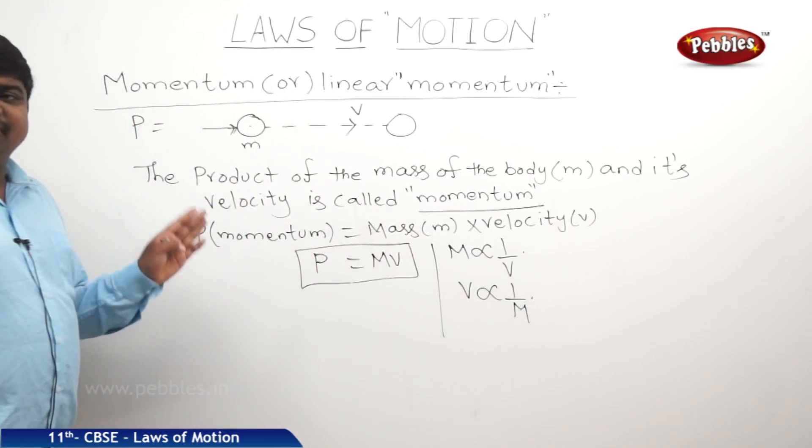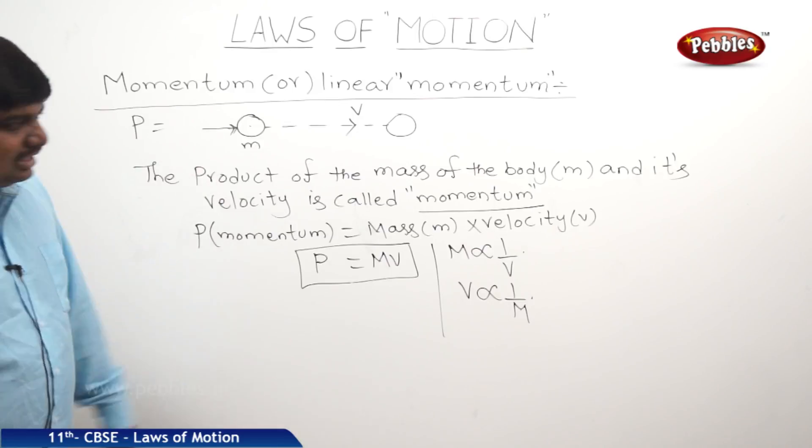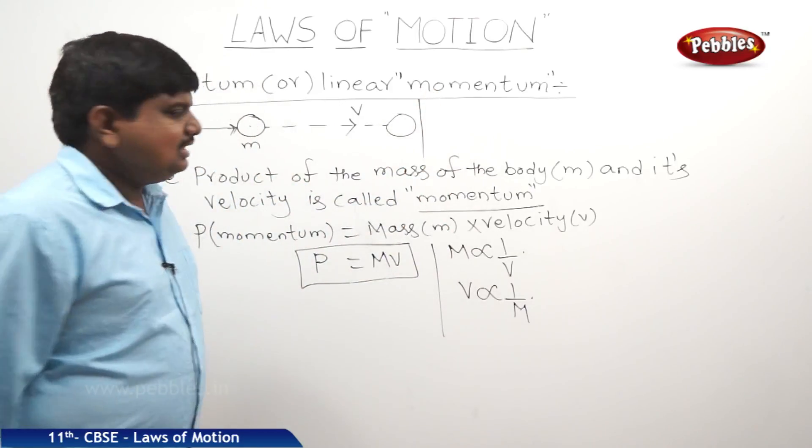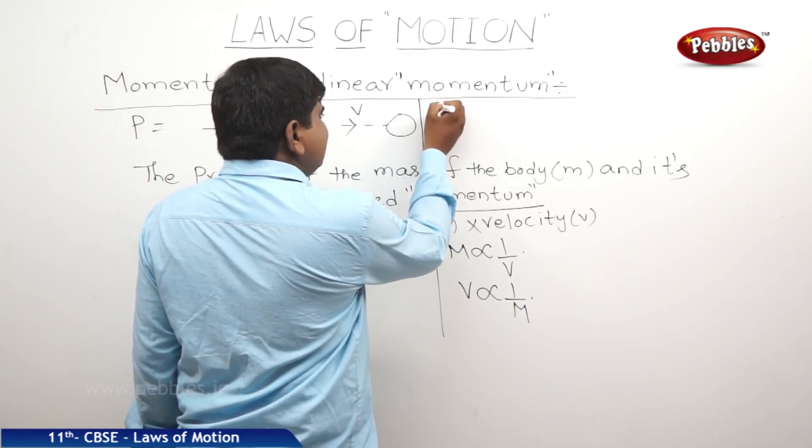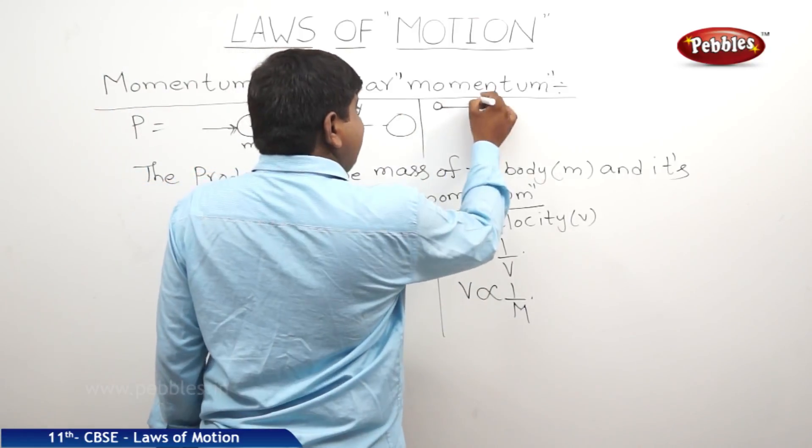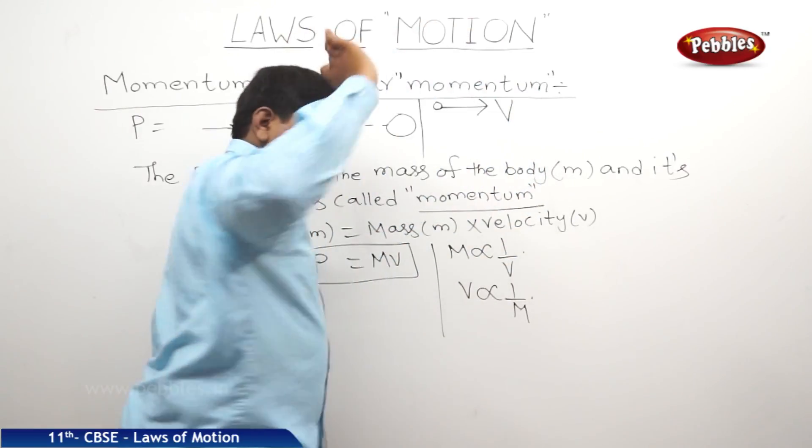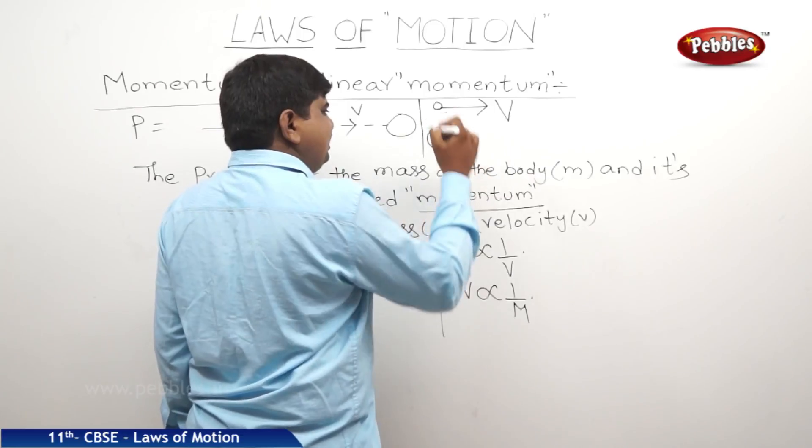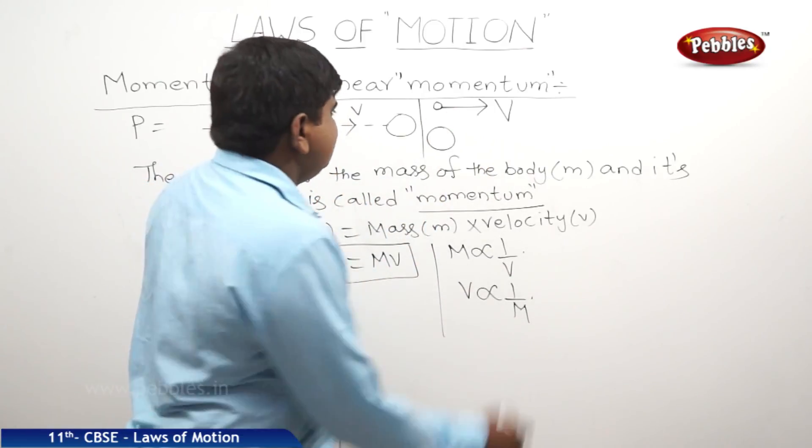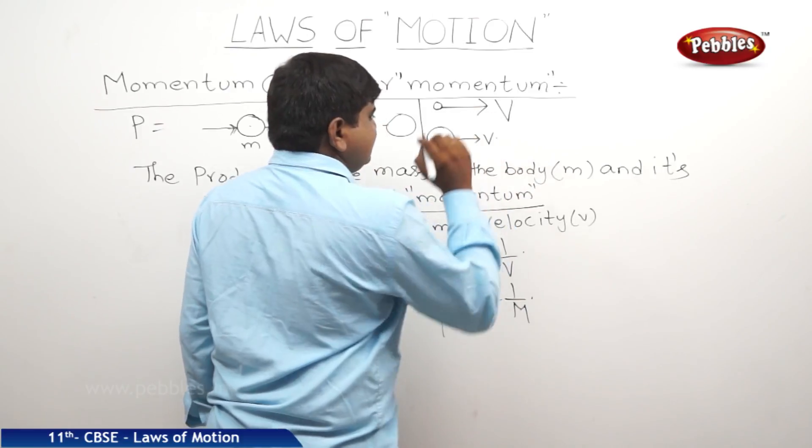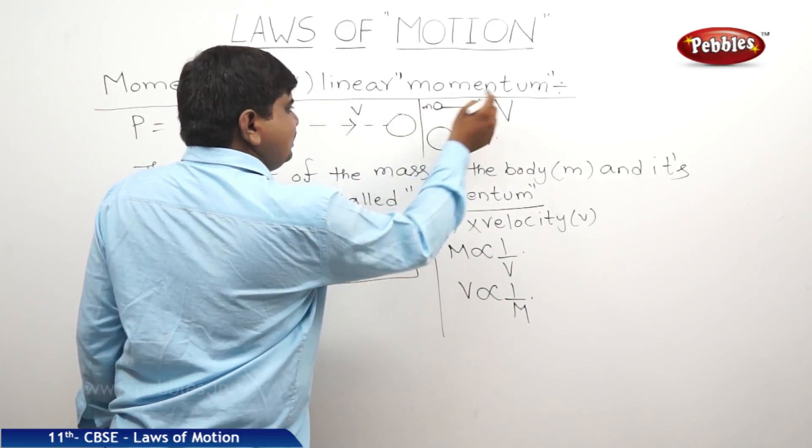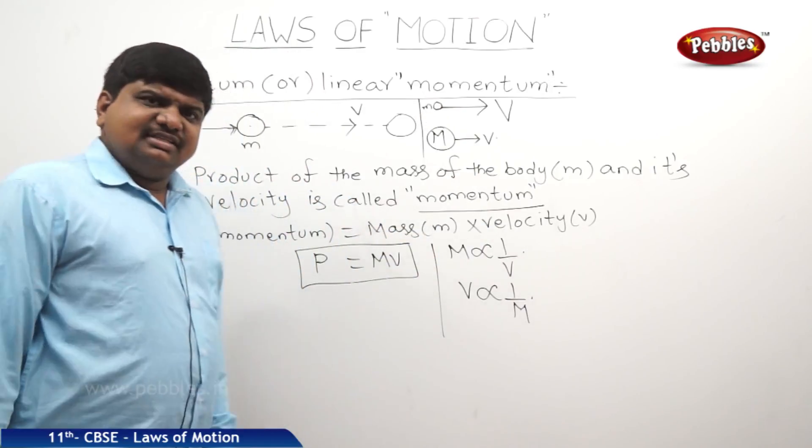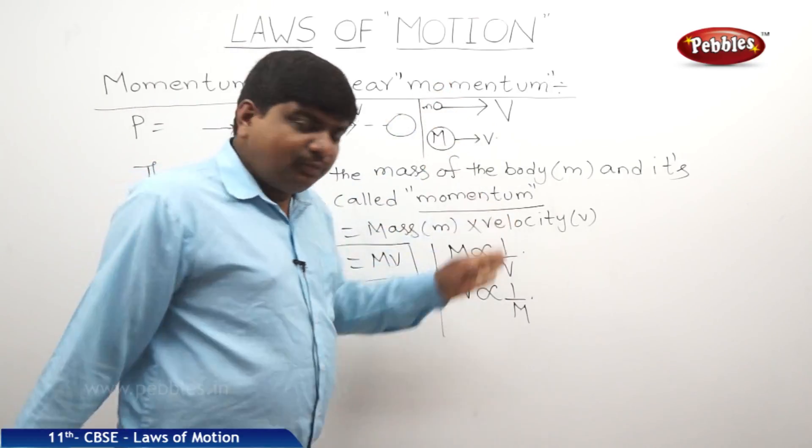So this mass of the body and velocity of the body, nothing but the momentum, has one different type of explanation to understand. Let us take a small body which is moving with high velocity, or let us take a big in size which is moving with less velocity. This is small m, capital V. This is capital M, small v. Is there any change in the momentum between these two bodies? No.